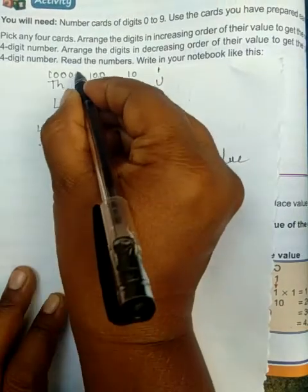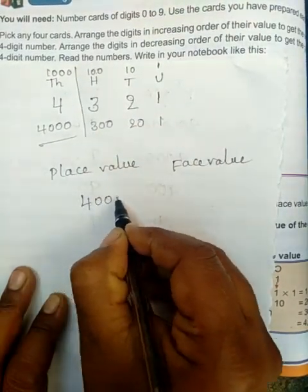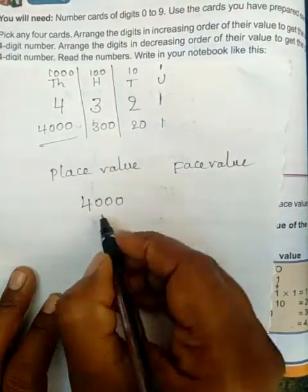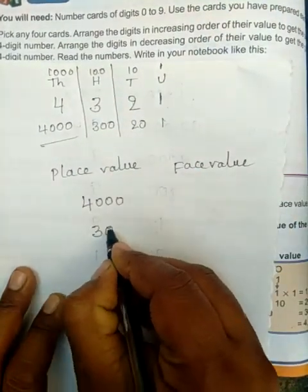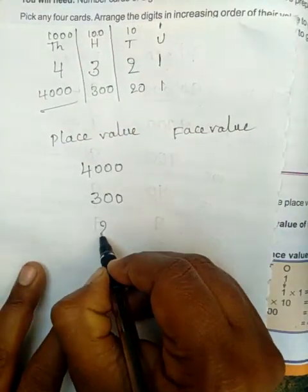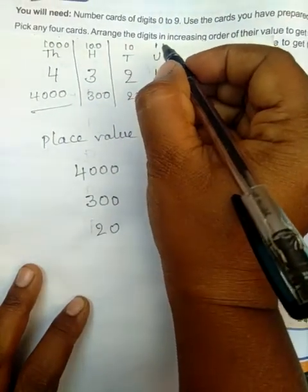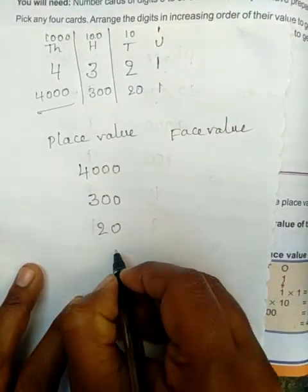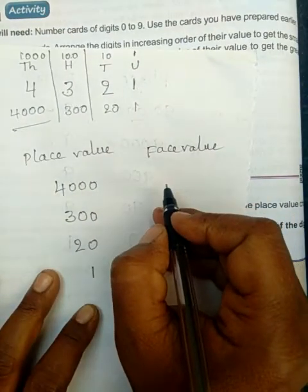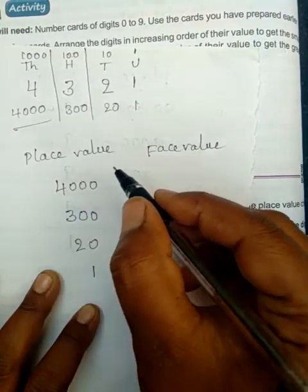See, children: 4 is in the thousands place, so the place value of 4 is 4000. 3 is in the hundreds place, so the place value of 3 is 300. 2 is in the tens place, so the place value of 2 is 20. 1 is in the units place, so the place value of 1 is 1. You already know how to find place value.